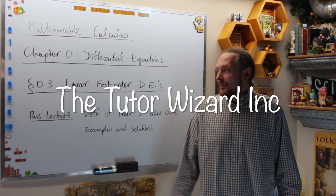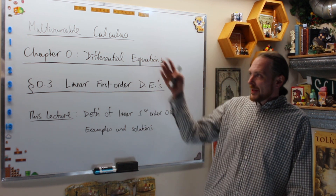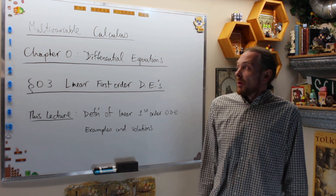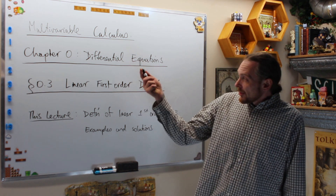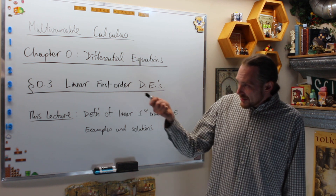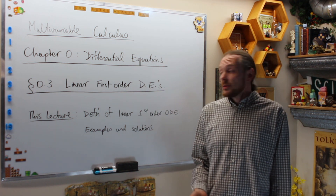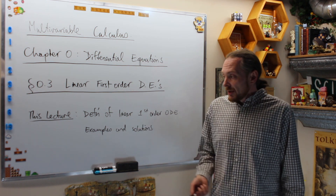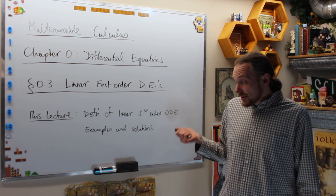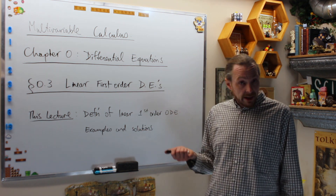Welcome back, this is the Tudor Wizards. I'm Adrian. Please subscribe right here and hit the notification bell — you'll get notifications for this series and many others. We're doing multivariable calculus, chapter 0, which is differential equations. This time we're doing section 0.3, which is linear first order differential equations. This lecture we're going to do the definition of a linear first order ordinary differential equation and do some examples with solutions.